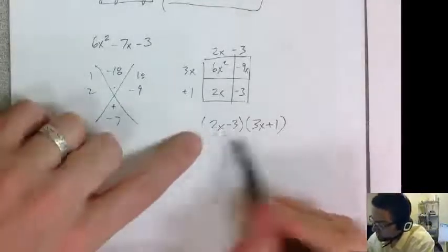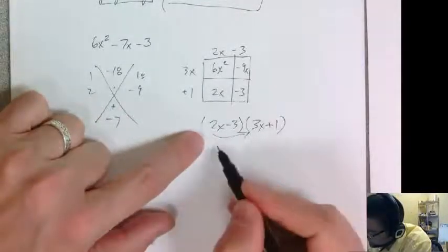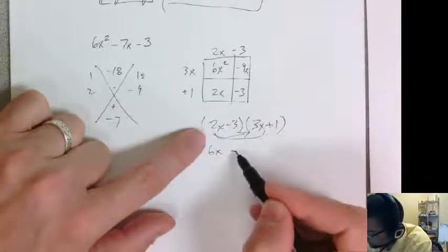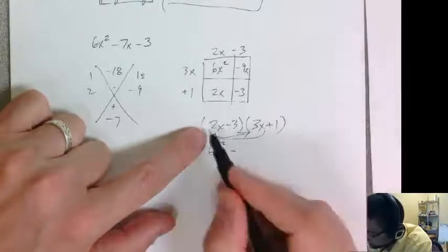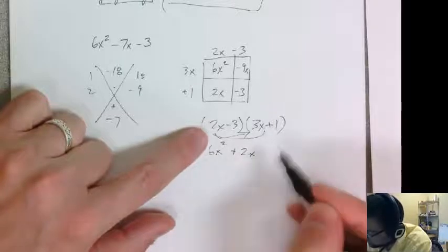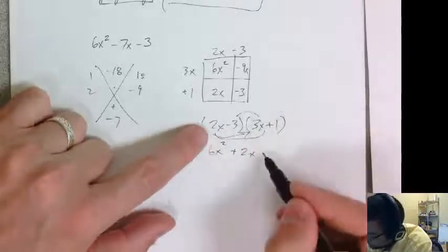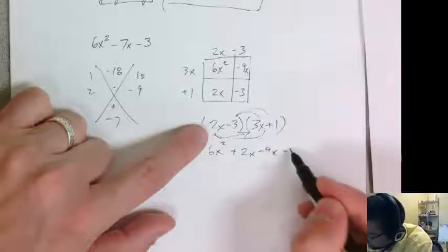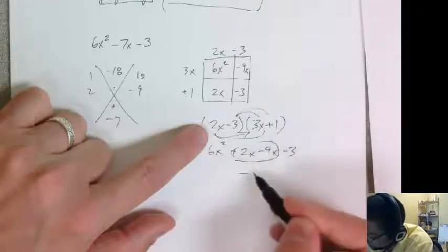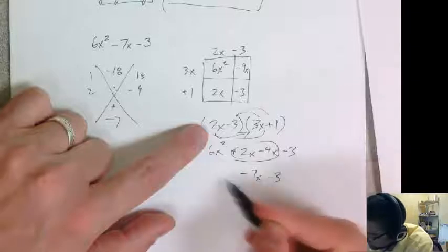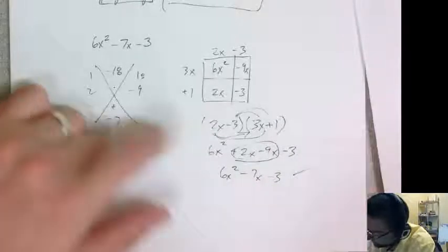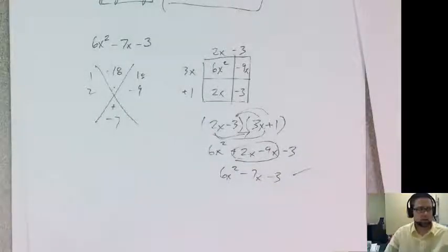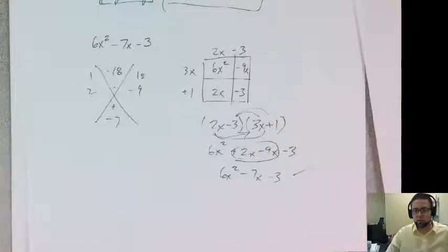So you can multiply it out to check your answer. So 2x times 3x is 6x squared. 2x times 1 is 2x. Negative 3 times 3x is negative 9x. And negative 3 times 1 is negative 3. These two combine to make a negative 7x. So it checks out. So there's a couple of a little bit more complicated polynomials and how to factor them.